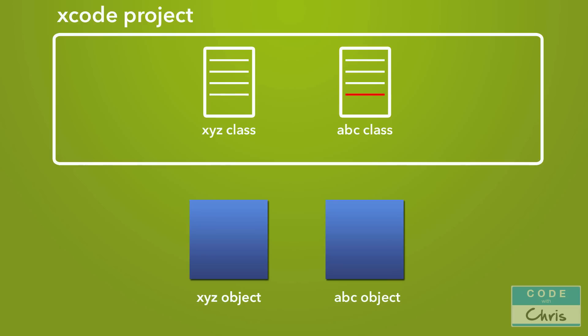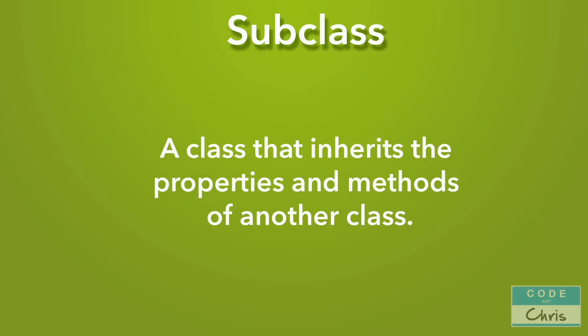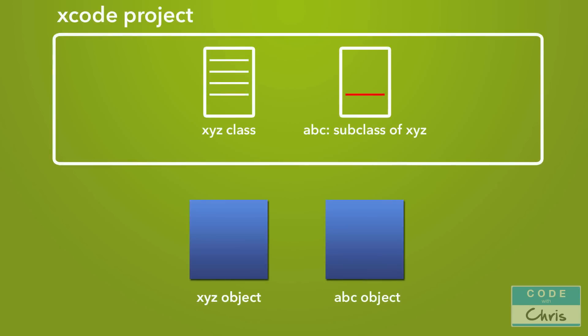In other object-oriented programming languages there's a concept called inheritance, and in Objective-C and Swift it's known as subclassing. A subclass is a class that inherits the properties and methods of another class. So going back to our scenario with the two similar components, we can write one class to describe the behavior of the first component, then write a second class and declare it as a subclass of that initial class. The second class then has all of the properties and methods of the first, without having to rewrite or redeclare them — we just write code to represent the difference.